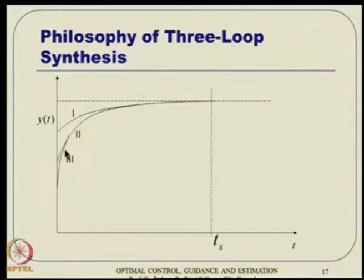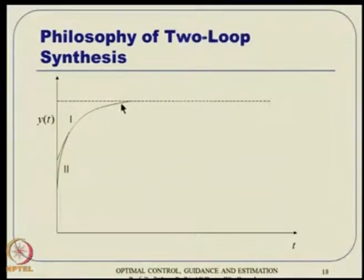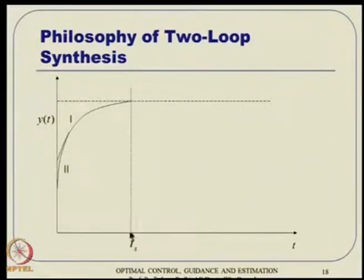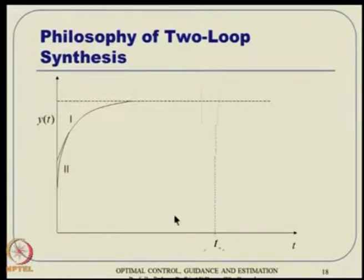We want to do something so that this outer loop is avoided. The inner-most loop can follow the second loop by design, and the second loop has been made slower to track the guidance loop. If we come out of the guidance loop and directly talk about body rate generation, then probably the body rate generation can catch up to the command very fast, reducing settling time significantly, allowing us to handle the engagement even with small T_go.